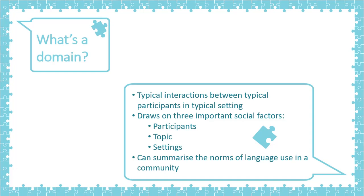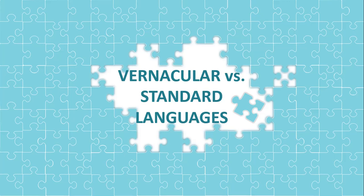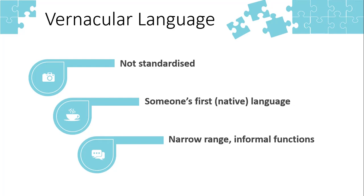Now let's move on to vernacular and standard languages. Vernacular language and standard language have different levels of formality in sociolinguistics. Vernacular languages are languages that are not standardized — there are no formal rules to guide them. As long as the people you talk to understand what you mean, just go on and speak. A vernacular language is also your first language, the one you first learned as a baby — your mother tongue.